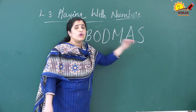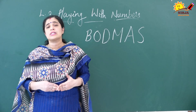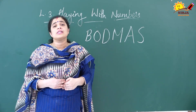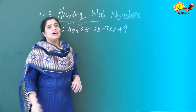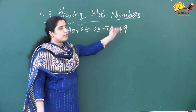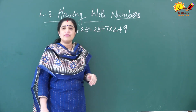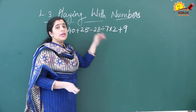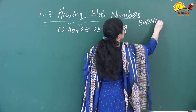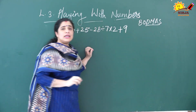Now we will explain this with an example. First we are going to discuss problems where brackets are not there, and after that we will discuss problems where brackets are present. Here is a problem where you can see all four operations — addition, subtraction, division, and multiplication. According to the BODMAS rule, since there are no brackets, we start with D for Division.